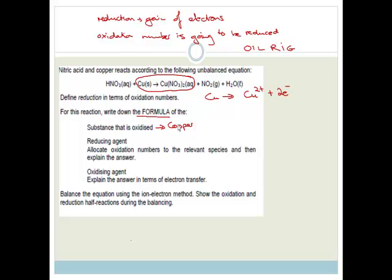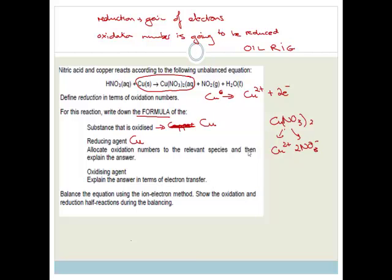The substance that has been oxidized is copper — you need to always write down the formula, which is just Cu. The reducing agent is the one that's been oxidized, so that is also Cu. The oxidation number of Cu is zero because it is a pure element. And Cu²⁺ is found in copper nitrate, Cu(NO₃)₂, meaning it becomes Cu²⁺ with two NO₃⁻ ions.